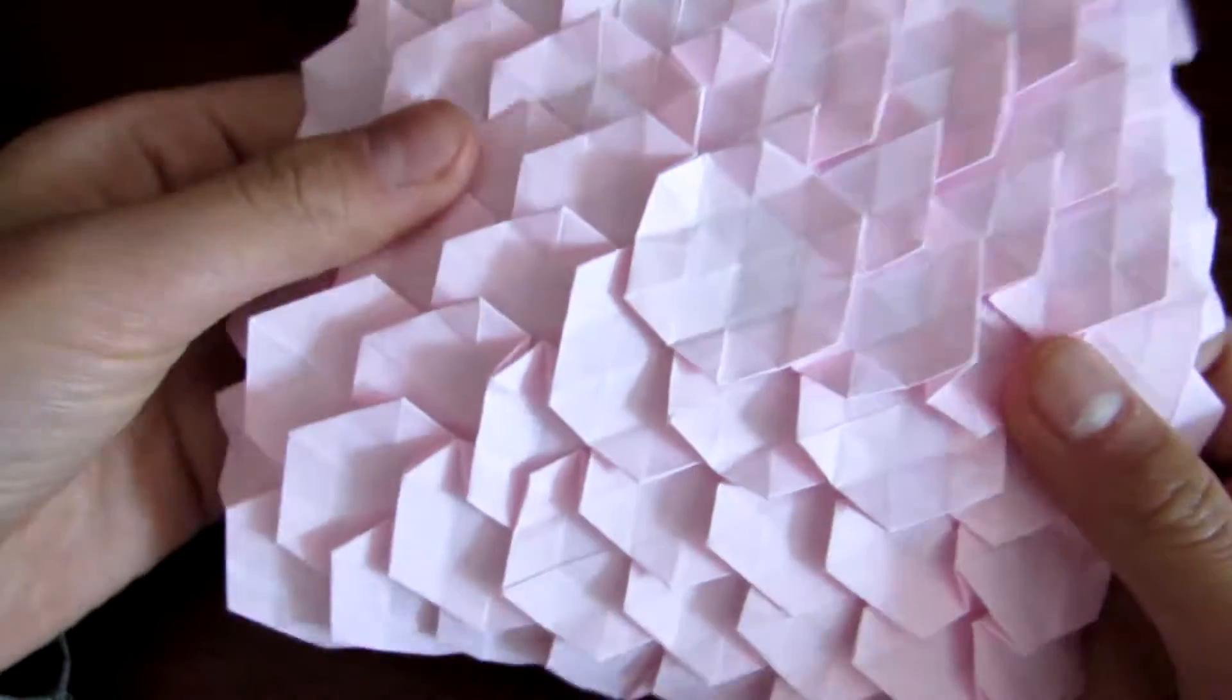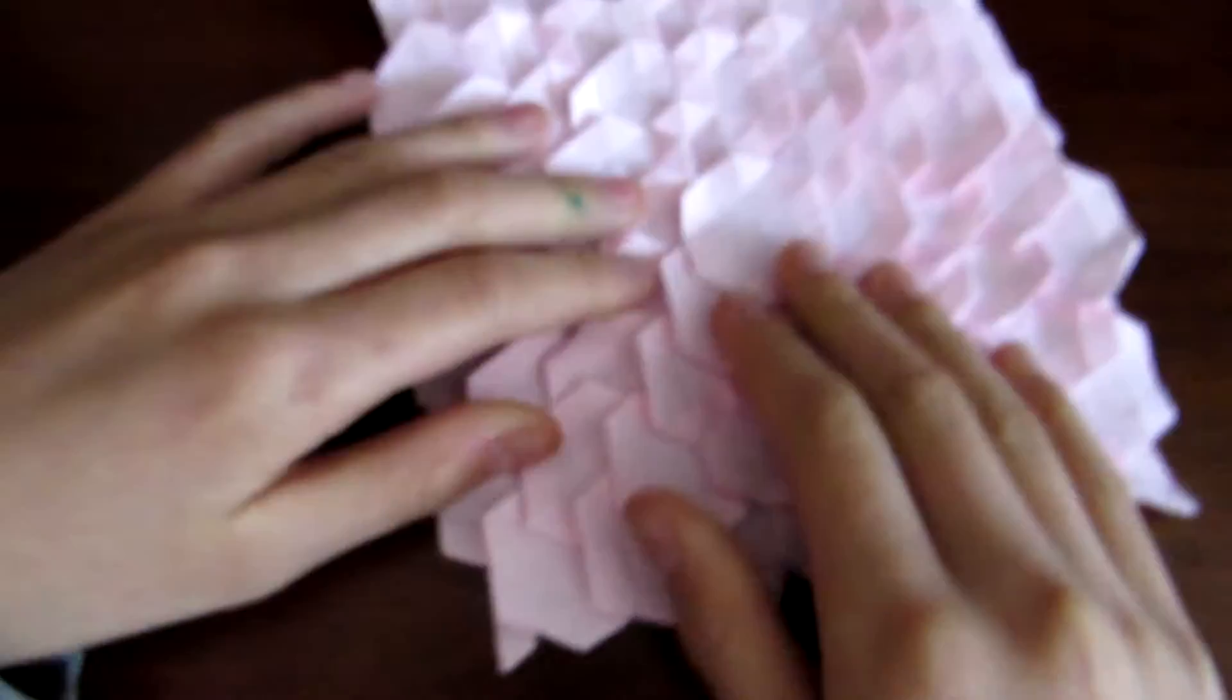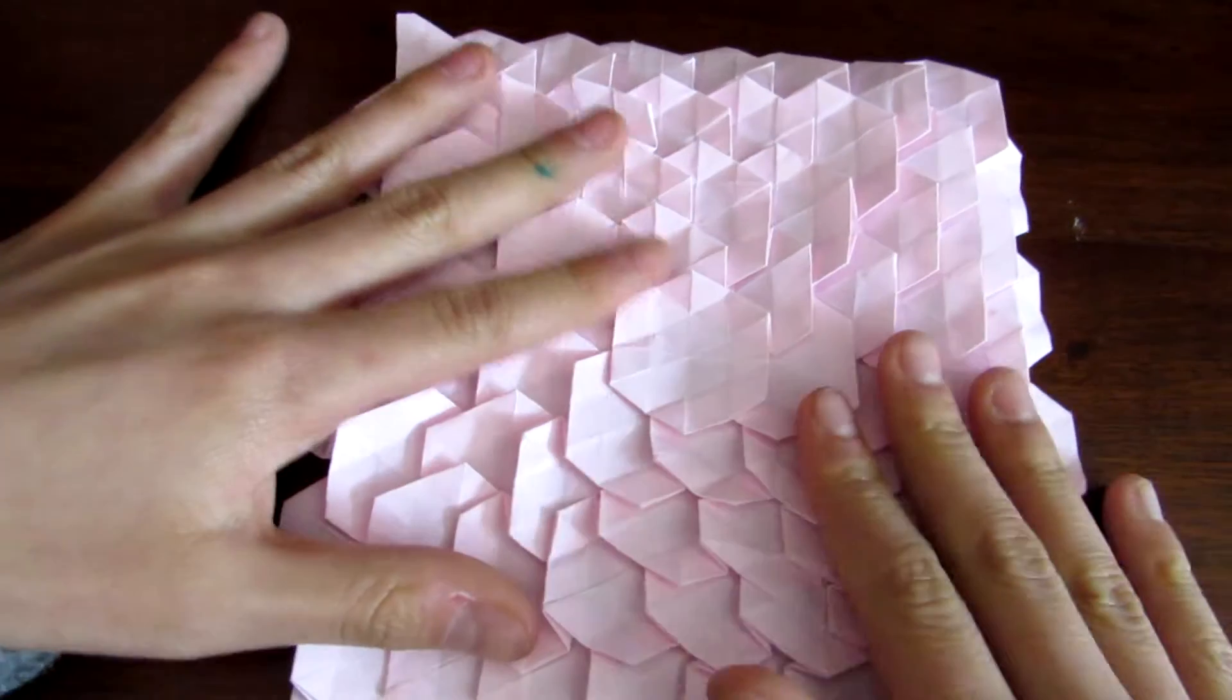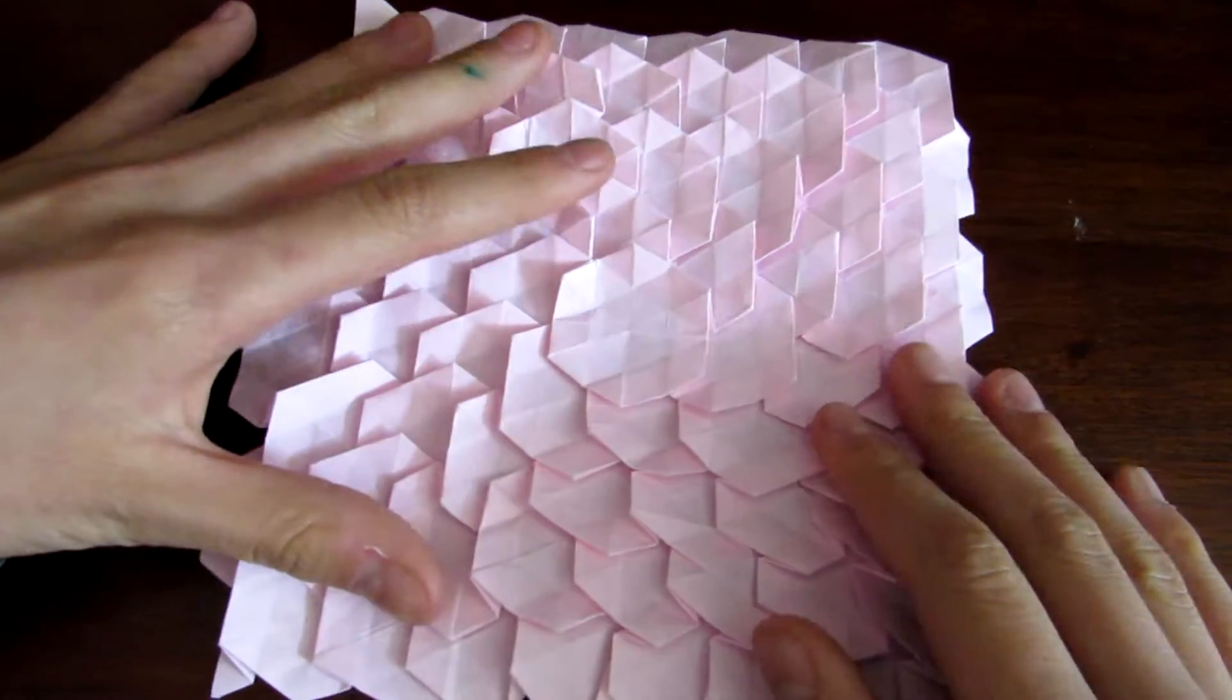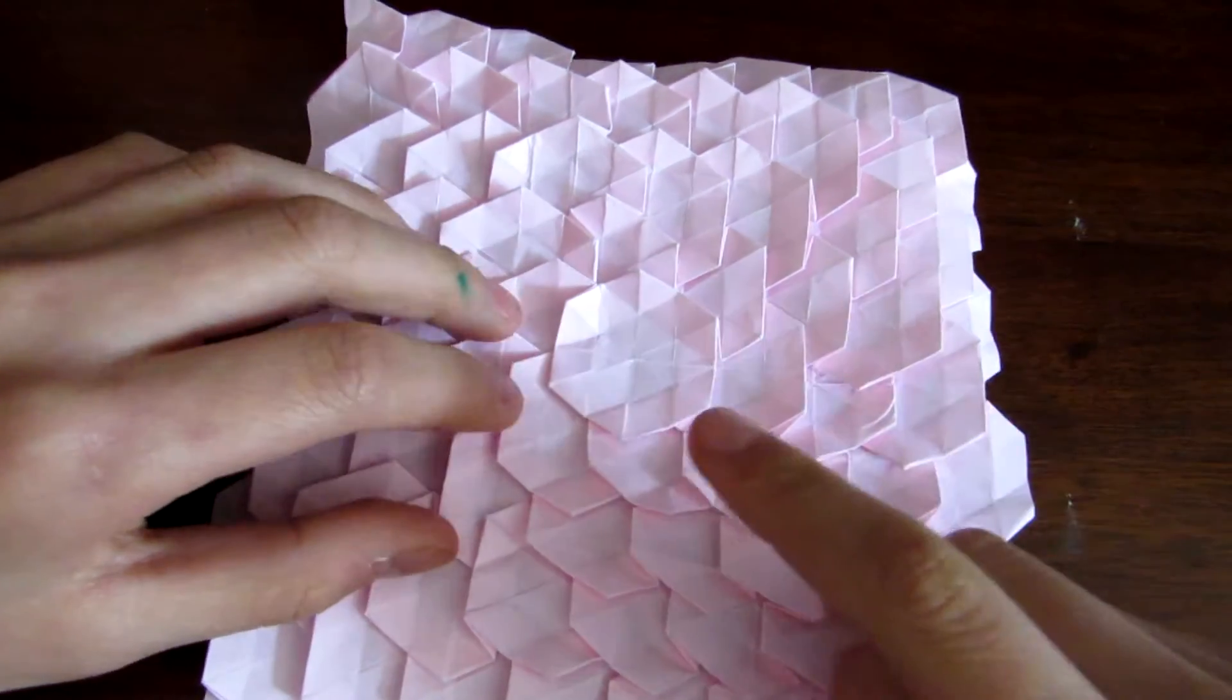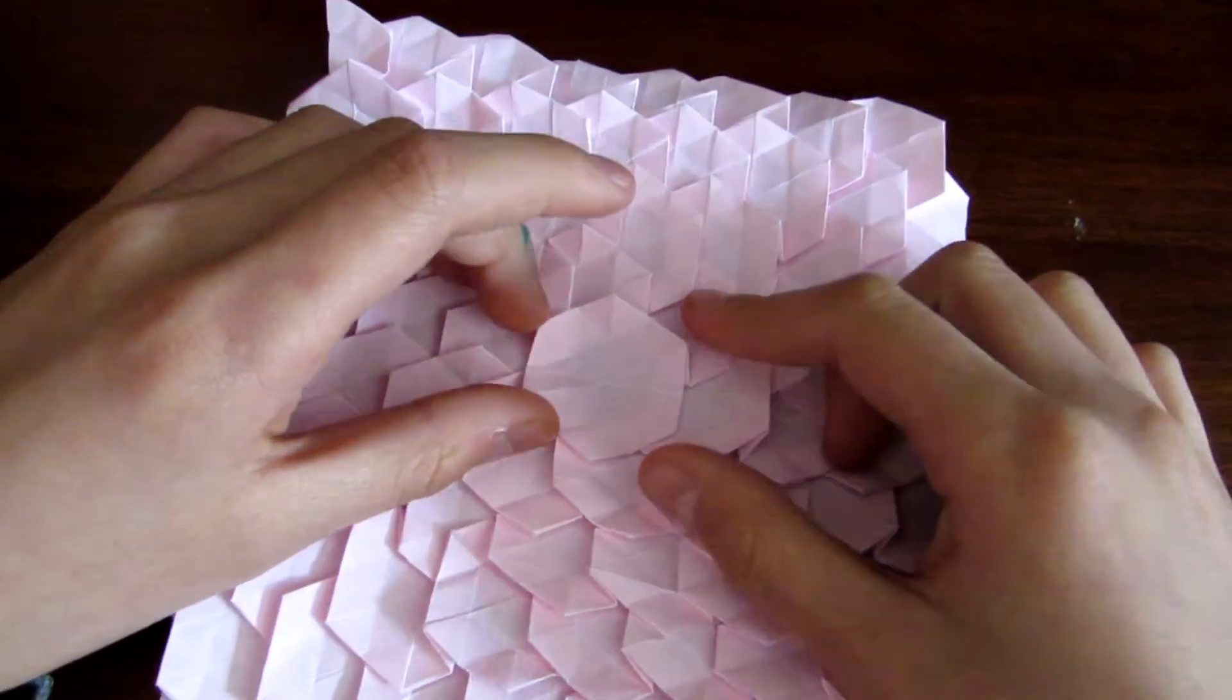This model is folded by a triangle grid, which I'll teach you how to fold. It's a 32x32 triangle grid.